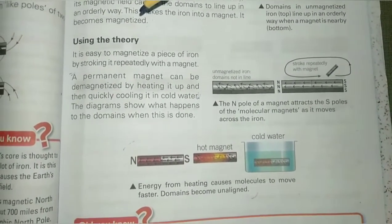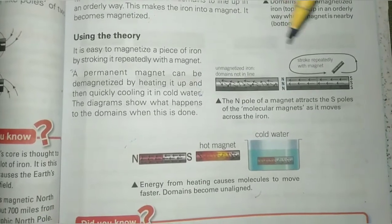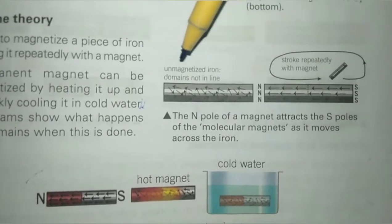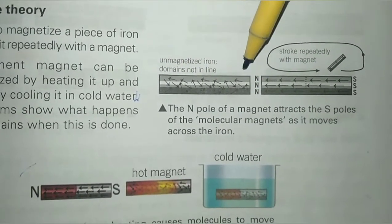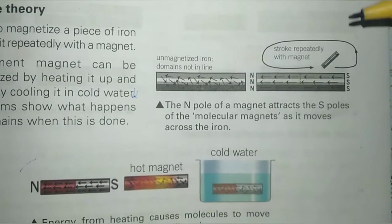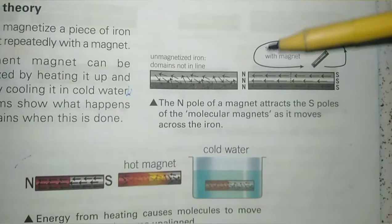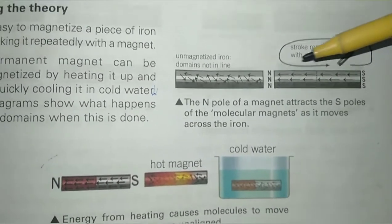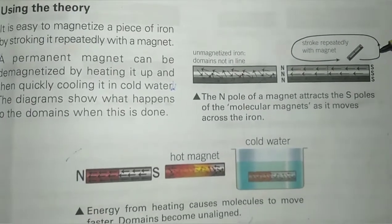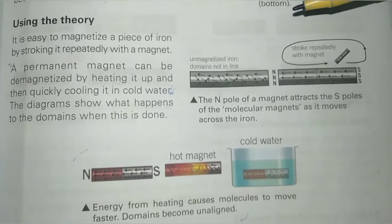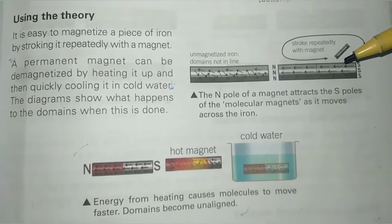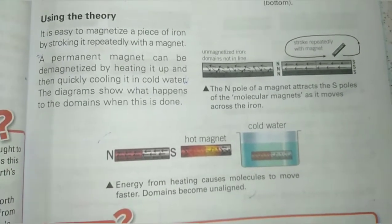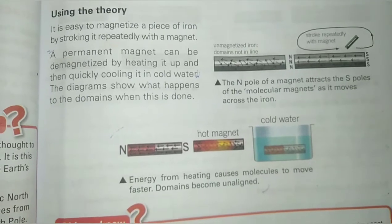Using the theory: to magnetize a piece of iron, we stroke it repeatedly with a magnet. In an unmagnetized iron rod, the domains are not lined up. When we stroke it with a permanent magnet, the north pole of the magnet attracts the south pole of the molecular magnet as it moves across the iron. As a result, the unmagnetized iron rod is converted into a permanent magnet.